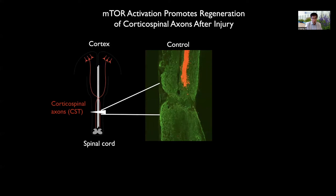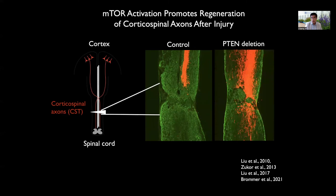Without treatment, injured corticospinal axons cannot regenerate spontaneously. However, we discovered that inhibition of the gene PTEN in cortical neurons led to robust axon regeneration after injury. Mechanistically, PTEN is an inhibitor of the growth-promoting mTOR pathway. Therefore, PTEN deletion or inhibition is expected to activate mTOR and promote axon regeneration. Importantly, other strategies of activating mTOR in cortical neurons can also achieve similar axon regeneration.